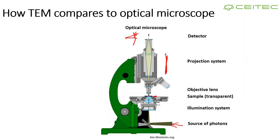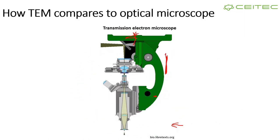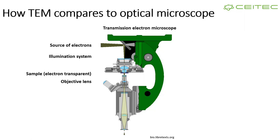An electron microscope is virtually just a microscope turned upside down. The main difference is that the source is not photons but electrons — you illuminate your sample with electrons. You have an illumination system with condenser lenses, the sample (which must be electron transparent), an objective lens, a projection system, and a detector — which of course cannot be your bare eye, since your eye is not sensitive to electron flux.